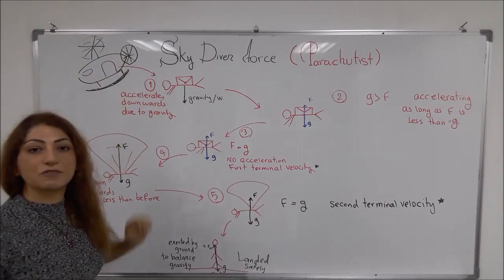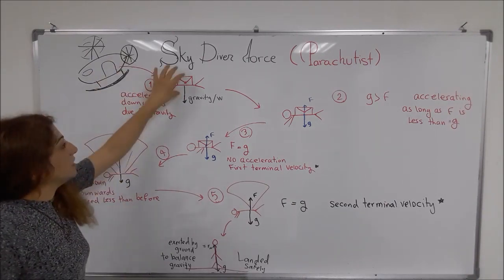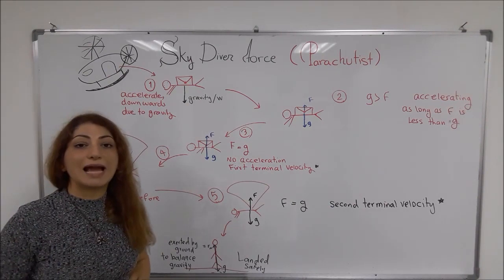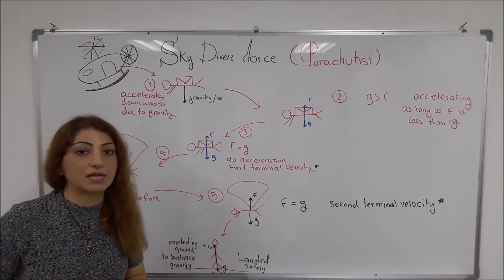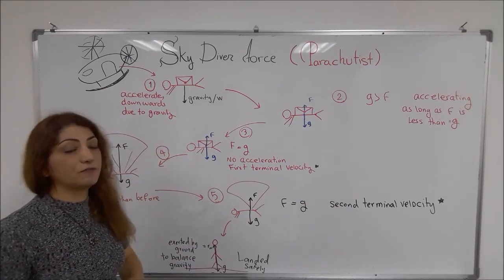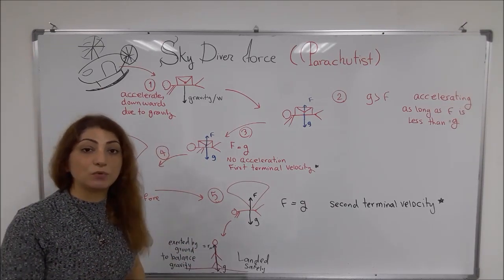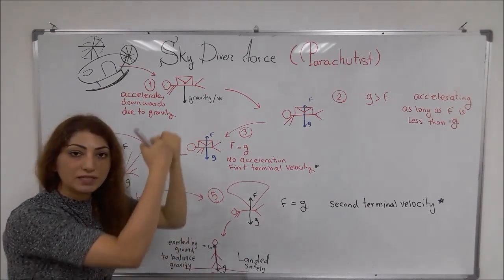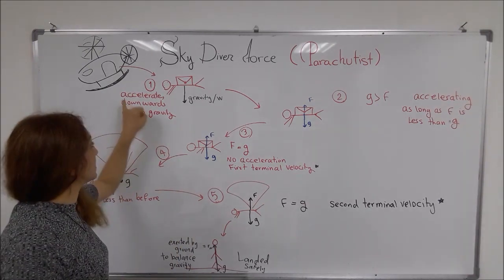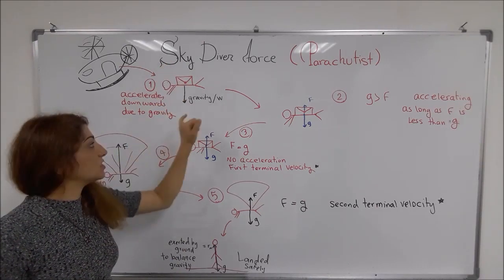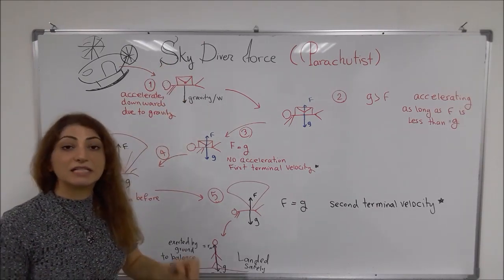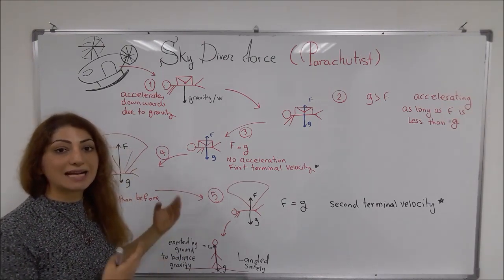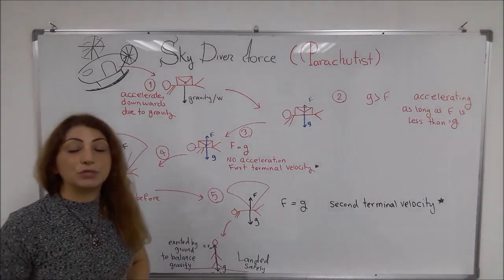This person has jumped just out of the airplane or the helicopter. His parachute is still not open. Only one force is acting on this person, and that's the force of weight or gravity, and it is downward. Because of the force of gravity on it, this person is accelerating downward to the ground.